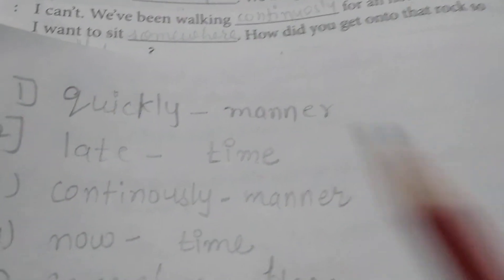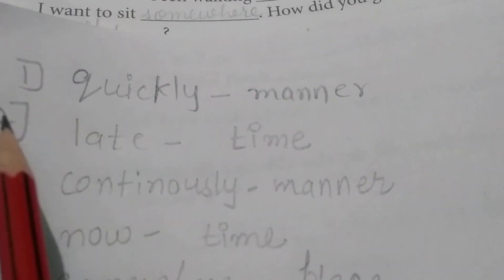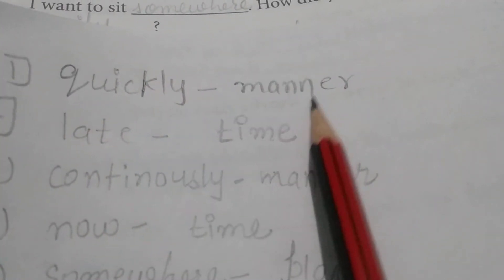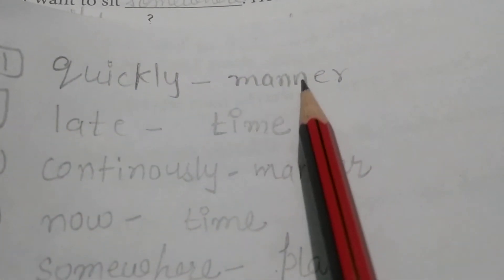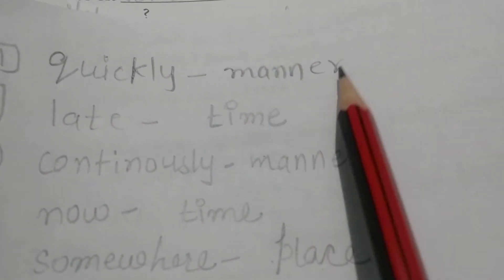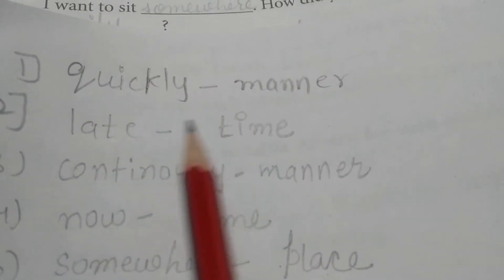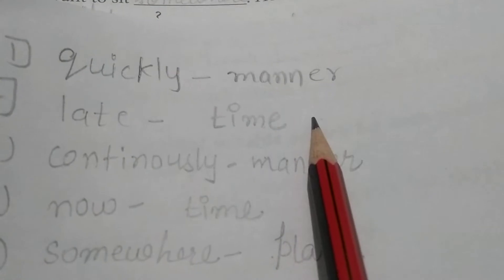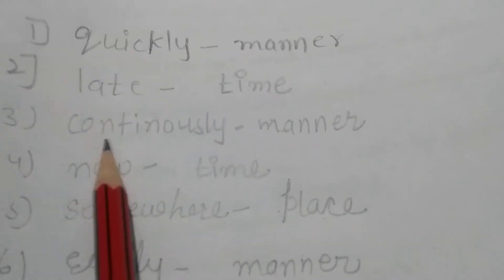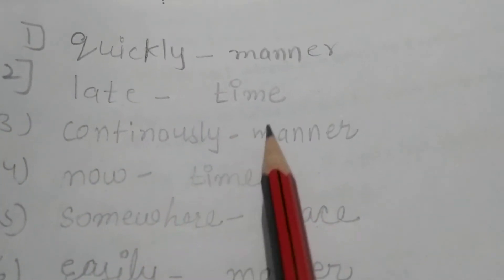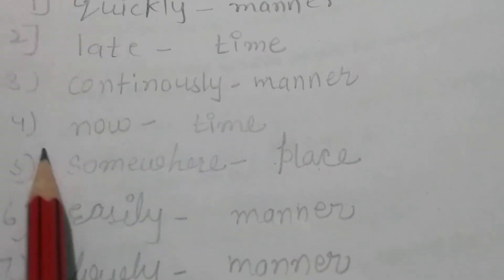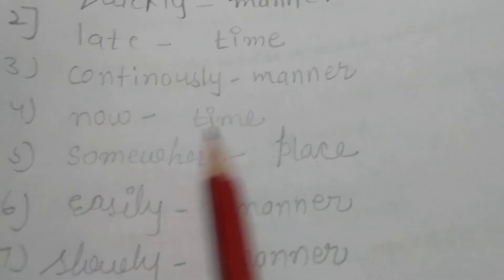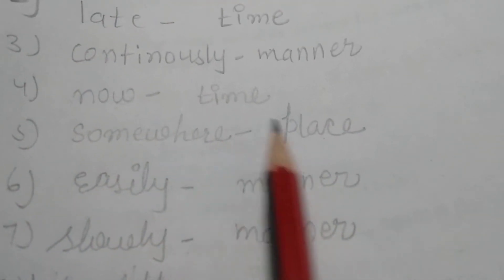So, which manner? Quickly — adverb of manner. Late — adverb of time. Continuously — adverb of manner. Now — adverb of time. Somewhere — adverb of place.